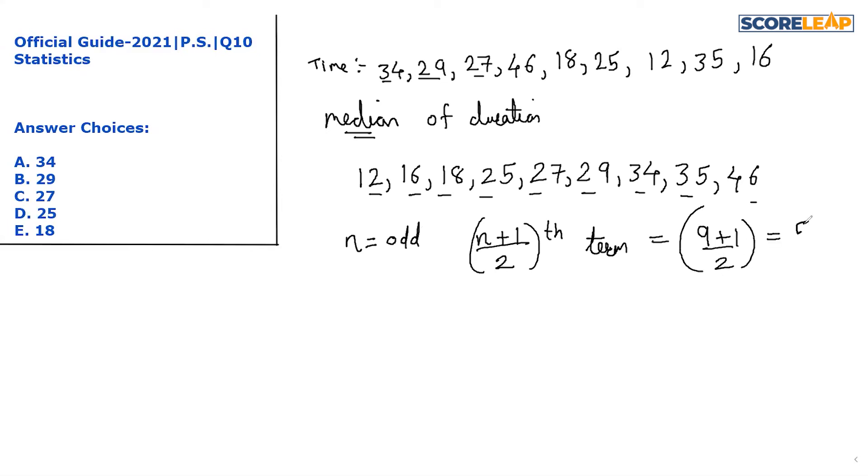Which is equal to the 5th term. So the 5th term in the ascending order will be the median of the duration of power failures. So 1, 2, 3, 4, and 5, the 27. Option C will be our correct option.